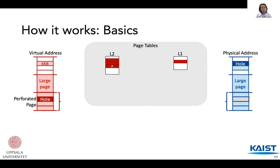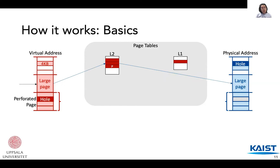Let's go through the basic translation steps of existing and perforated translations. Current systems have 4 levels of page tables — in this illustration, level 4 and level 3 are omitted for simplicity. All translations traverse through levels 4 and 3, then come to the level 2 page table. A regular page goes through levels 2 and 1 and is translated into the regular page. A 2MB large page goes through level 2 and is translated directly into a large page.